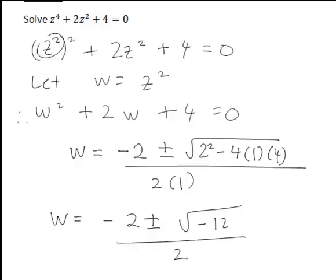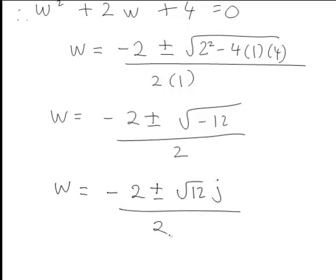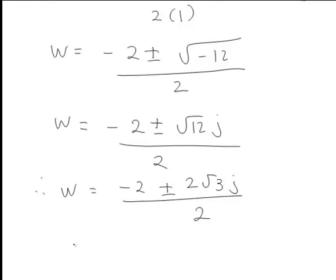The square root of -12 is just √12 · j, so this becomes (-2 ± √12·j) / 2. Since √12 = 2√3, the 2's cancel, giving us solutions w = -1 ± √3·j.